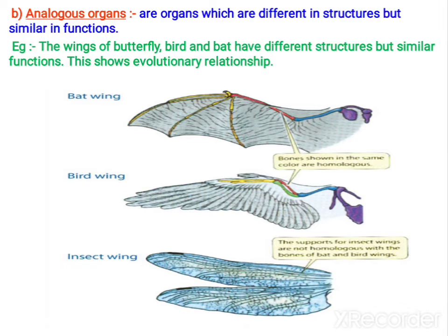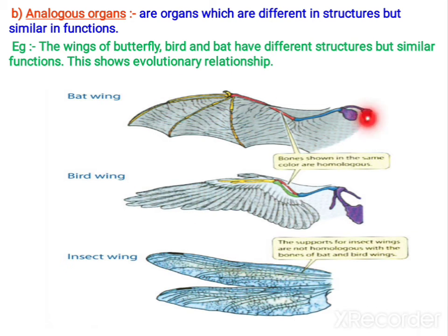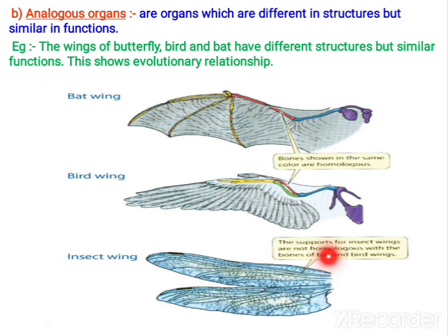The next one is analogous organs — they are just opposite to homologous organs. Analogous organs are organs that show different structure internally, but they have similar function. When you observe, all wings — bat wing, bird's wing, insect wing — are all used for flying only. All are useful for flying, and looking alike we call all of them wings.